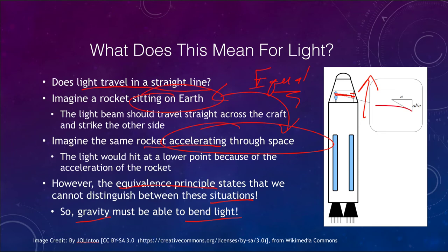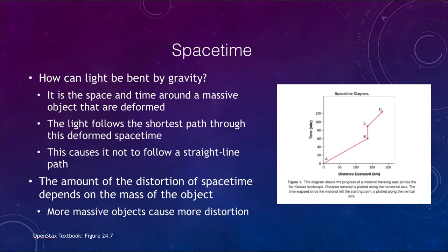Newton said that gravity was a force between objects with mass. If light has no mass, then gravity should not be bending it. So let's take a little closer look at what some of this does. How can light be bent by gravity? How can this possibly work? It does not make sense under Newton.